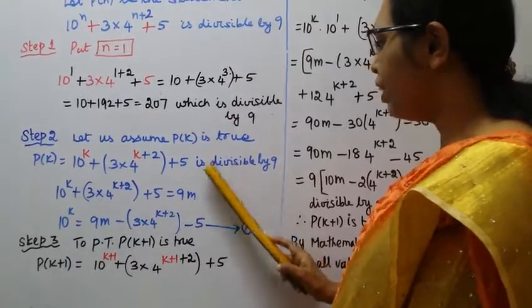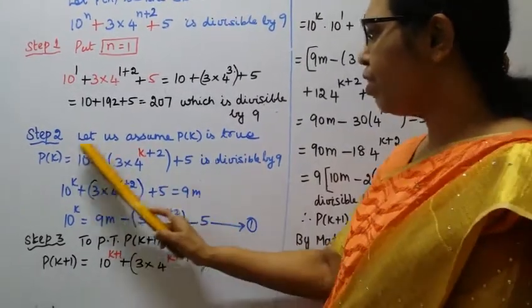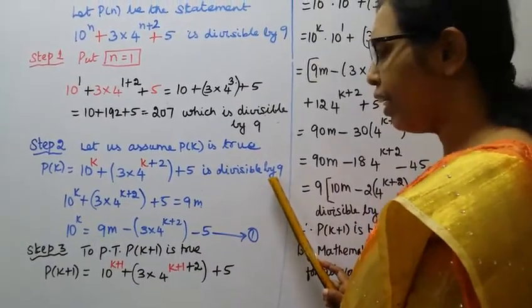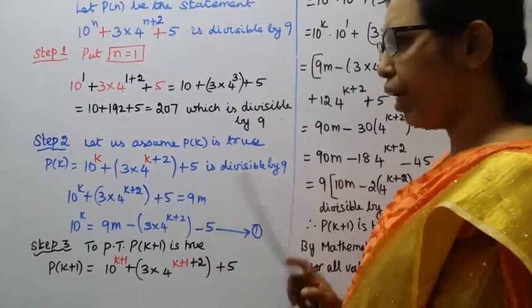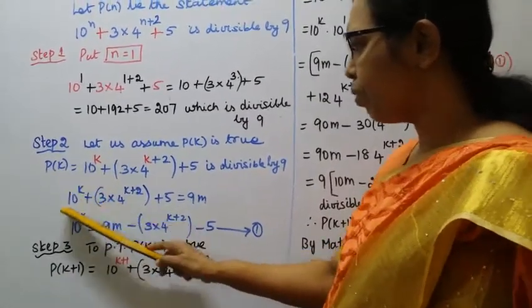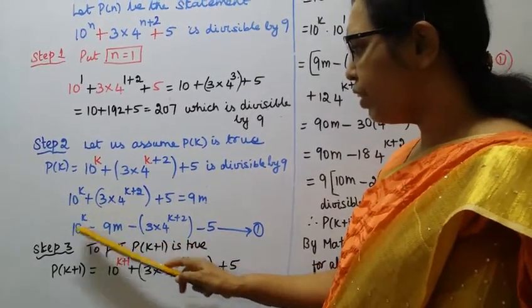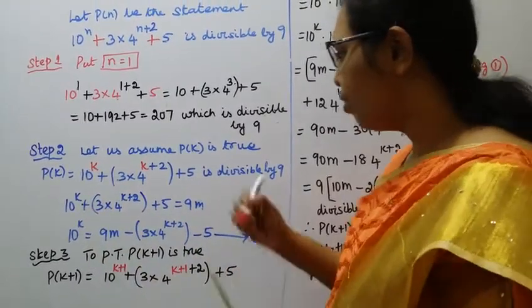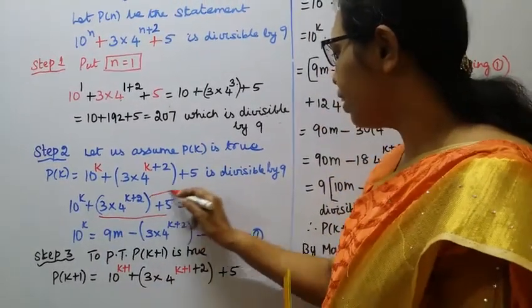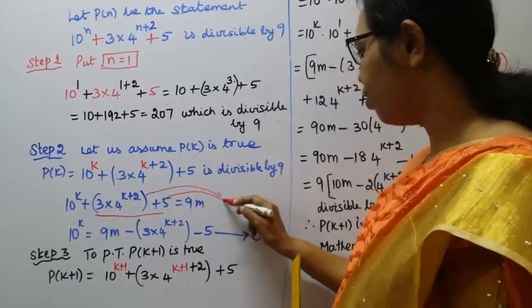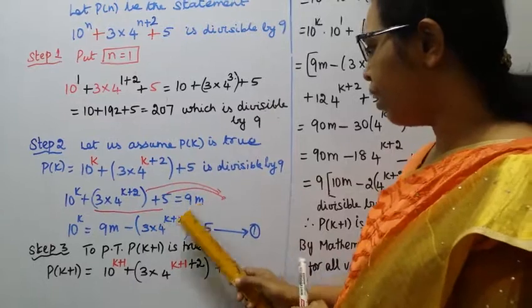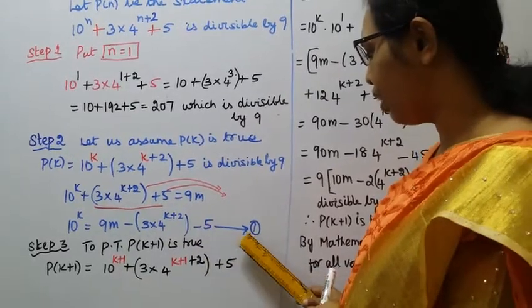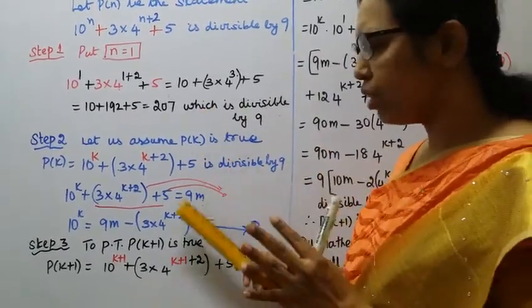Divisible, the full term P(k) is equal to 9m. Taking 10 power k to the left hand side, 10 power k equals 9m minus 3 into 4 power k plus 2 minus 5. Using equation 1.